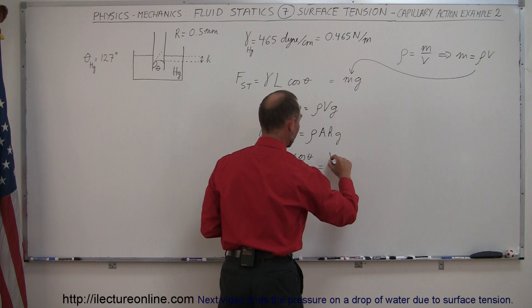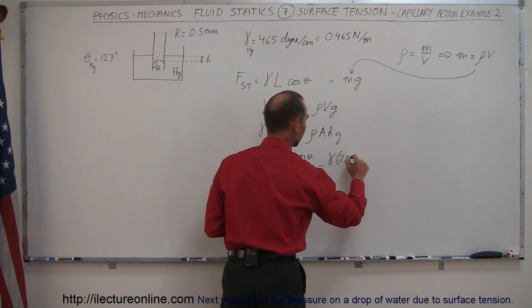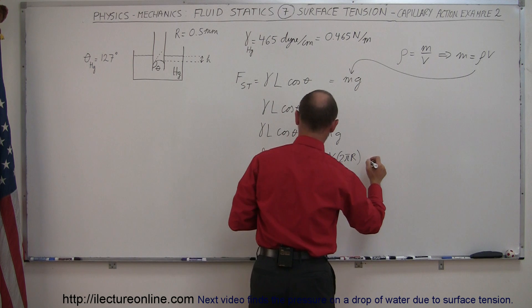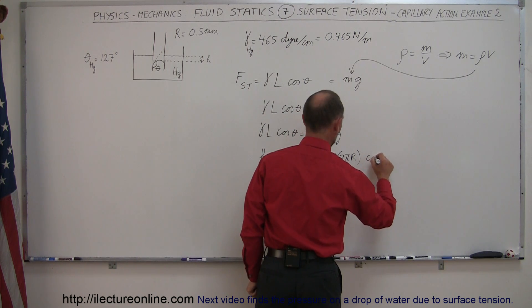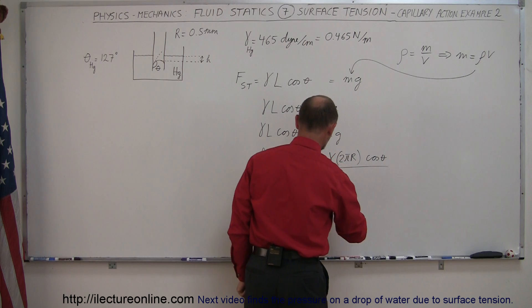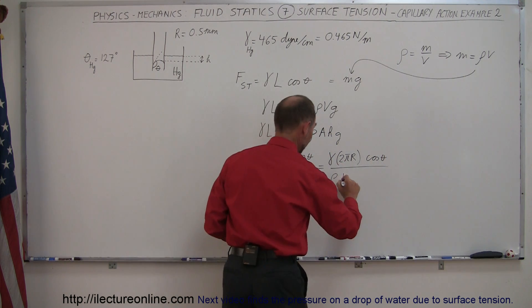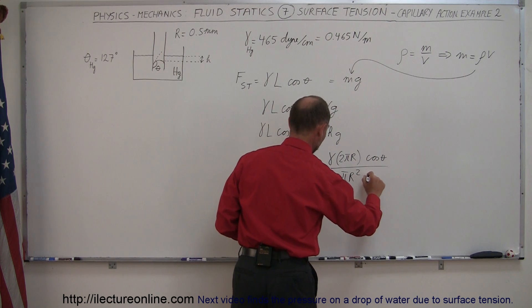So this would become gamma times 2 pi r. That is the circumference of the inside of the tube times the cosine of theta divided by density. The cross-sectional area would be pi r squared. Pi r squared. And then we have g.